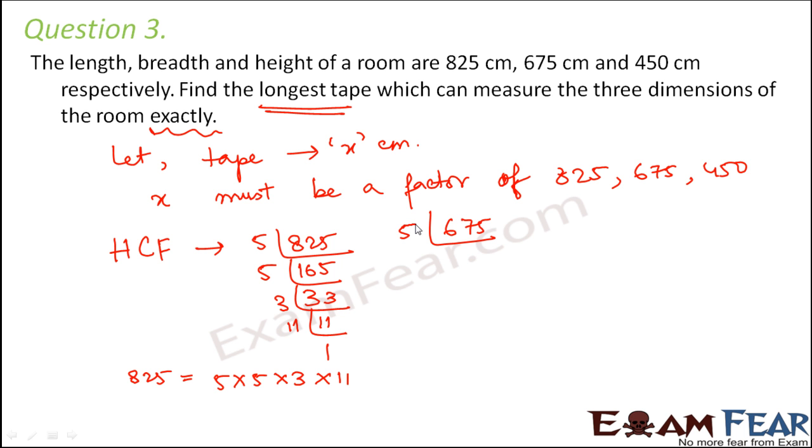Now let us do it for 675. So 675 can be divided by 5, this would be 135, again by 5, this would be 27. Now 3 times 9 is 27, 3 times 3 is 9 and 3 times 1 is 3. So 675 can be written as 5 into 5 into 5 into 3 into 3 into 3.